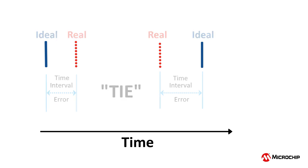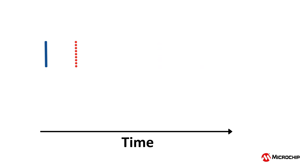The real, non-ideal clock can arrive before or after the ideal clock rising edge at different time intervals.